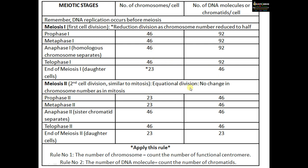In meiosis II, what happens is just like mitosis — it is called equational division, and no change in chromosome number occurs. In prophase II there are 23 chromosomes and 46 chromatids. In metaphase II also 23 chromosomes and 46 chromatids. In anaphase II the sister chromatids separate, therefore there will be 46 chromosomes and 46 chromatids. In telophase II there will be 46 chromosomes and 46 chromatids. At the end of meiosis II, four daughter cells are formed, each with 23 chromosomes and 23 chromatids.